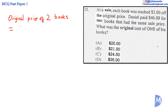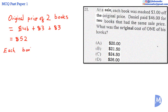...equal to $46 plus $3 plus $3 — that is $3 extra for each book — which equals $52. Both books had the same sale price, so each one originally cost $52 divided by 2, which is $26. The answer is D.